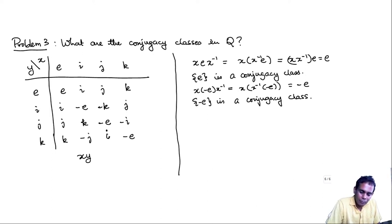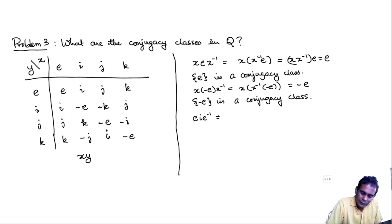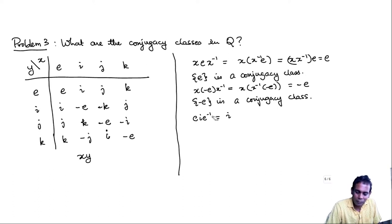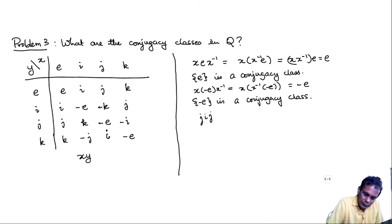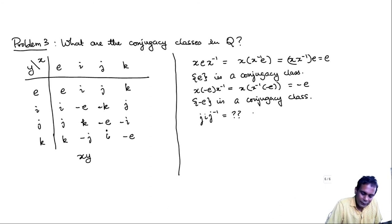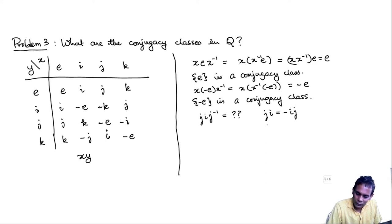Now let's think about i and what happens when we conjugate it by various elements. Conjugating by e gives just i. The interesting case is j·i·j⁻¹. Using the identity from the multiplication table, j·i = -i·j, and multiplying both sides on the right by j⁻¹ gives j·i·j⁻¹ = -i. So -i is in the conjugacy class of i.